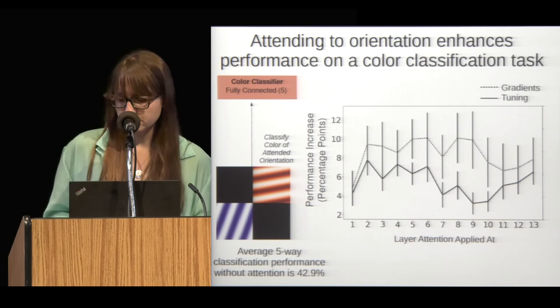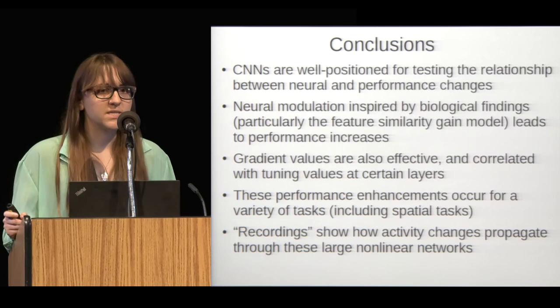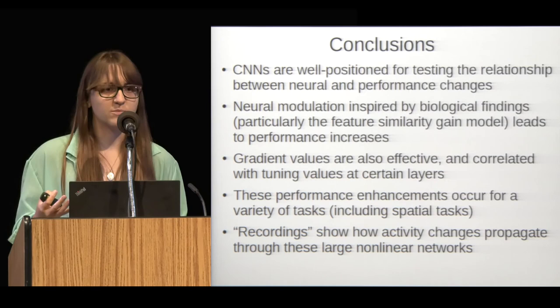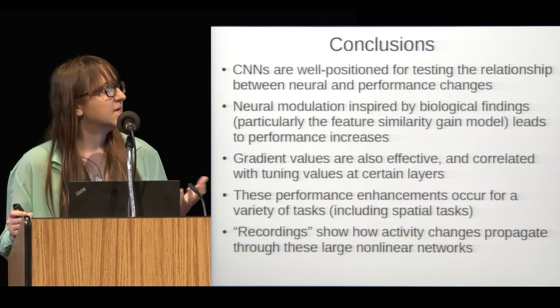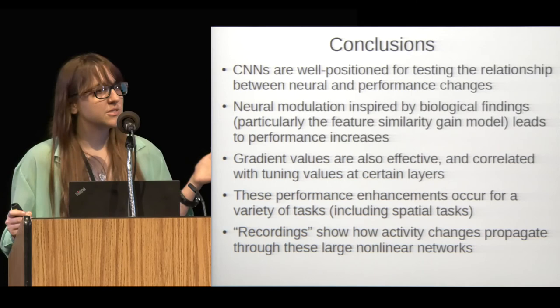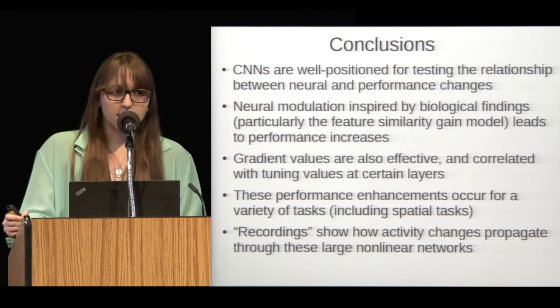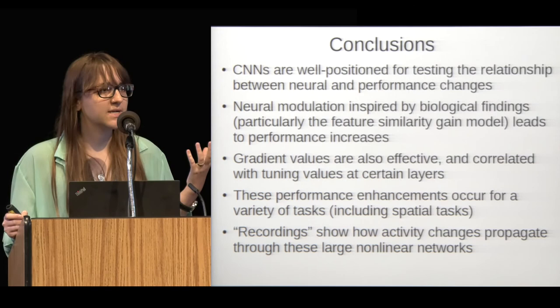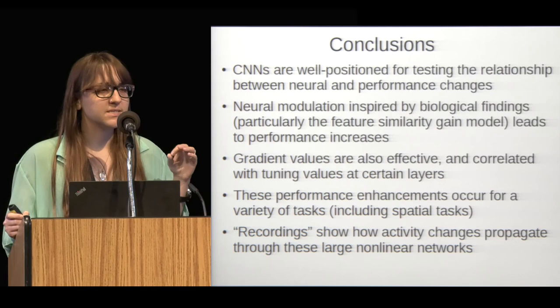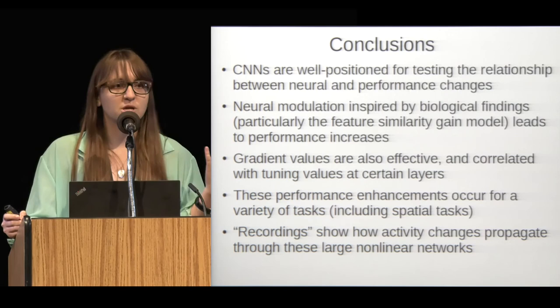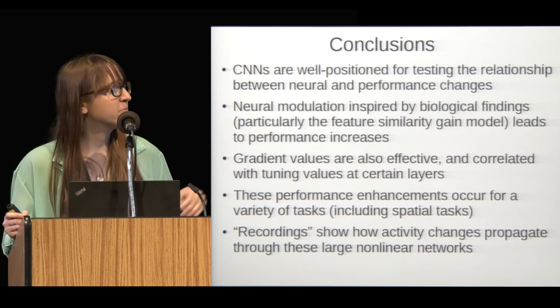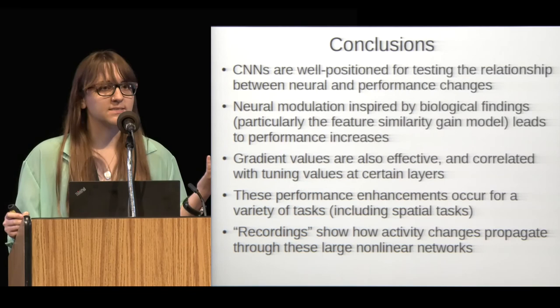To conclude: convolutional neural networks are well positioned to test the relationship between neural changes and performance changes because they perform a task and have realistic neural representations. Using attention inspired by the feature similarity gain model, which is observed biologically, leads to performance increases in these networks. Interestingly, gradient values are equally effective and more effective at earlier layers, which raises the question of whether the brain is targeting neurons according to tuning or according to something more complex like these gradient values — the literature isn't quite precise enough to answer that definitively. These performance enhancements occur for a variety of tasks, and we can use recordings in a neuroscience style to help understand how changes propagate through these large and complex networks.